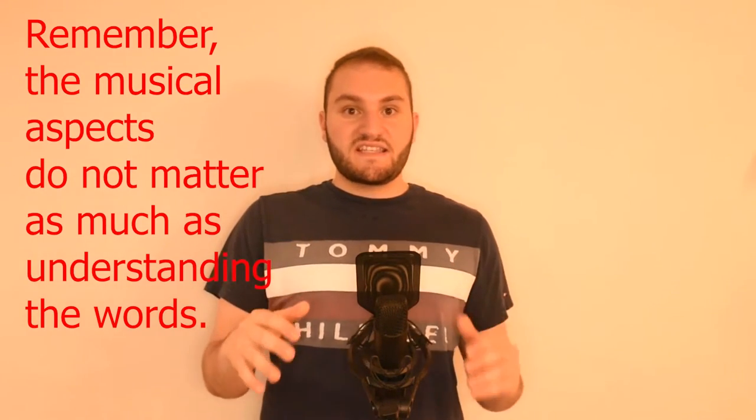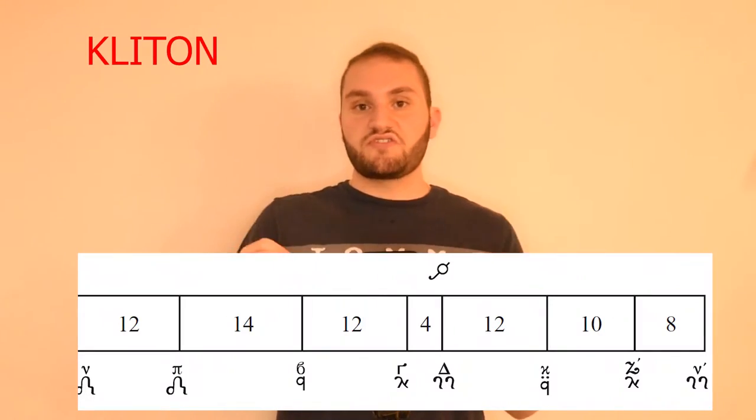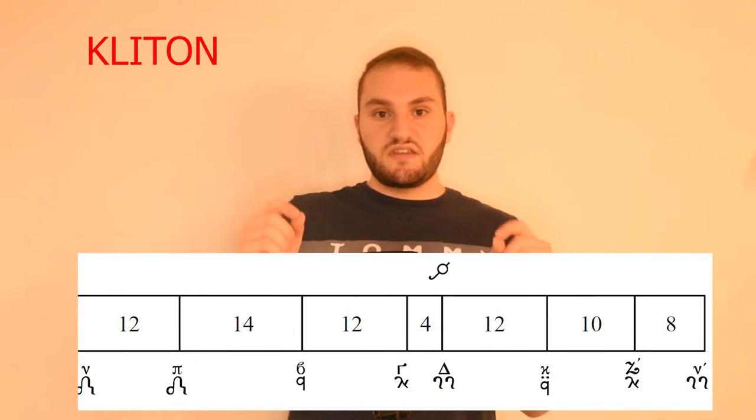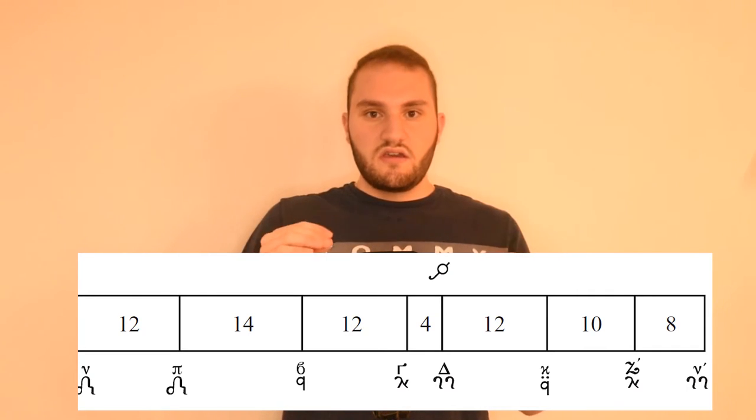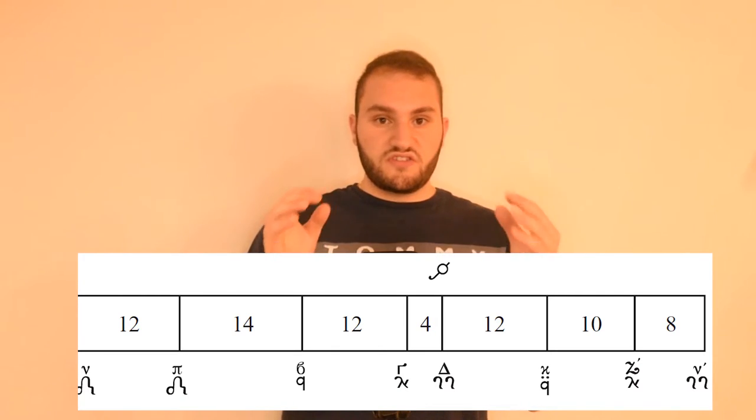Now we're going to talk about the musical aspects of the epistle. I left this for last because if you don't have any of the other things beforehand, the musical aspects will be useless. The scale used for the epistle is called Cliton, or the reader's tone. It starts on Di, and you go up to Zo — the Zo is flat. The Gha is sharp, and the Vou is very sharp. In western terms: G, A, B-flat, and from below: G, F-sharp, E-sharp or F. That's basically the scale. Sometimes I like to make the Zo natural.